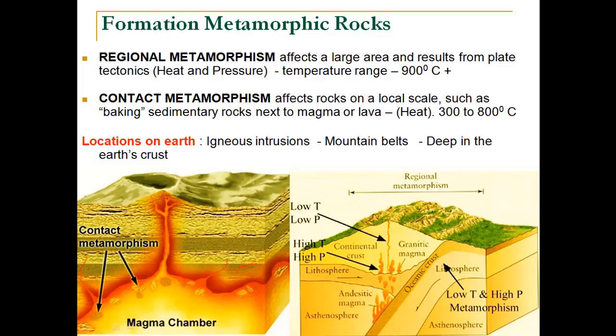The second way is contact metamorphism. The name itself suggests that metamorphic rocks are formed due to contact. It mainly affects rock on a local scale — such as baking of sedimentary rocks or surrounding adjacent rocks due to hot magma. The heat reaches up to 300 to 800°C. As seen in this sketch, a magma chamber has vents and capillaries through which magma spurts toward the surface. When hot magma comes into contact with adjacent rock, due to contact heating the rocks get altered into a new metamorphic rock. For example, if a layer is made up of limestone, the heat may convert it into marble.